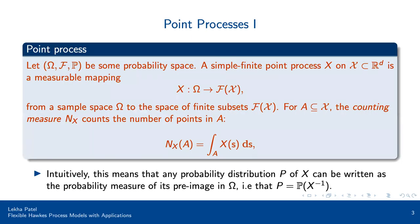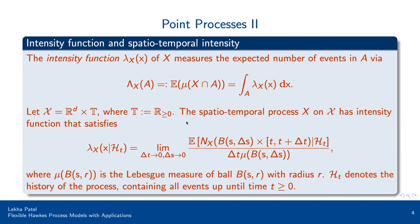As an introduction to point processes, we have some probability space, and we usually deal with simple finite point processes X on curly X, which is a subset of R to the D. This is a measurable mapping from a sample space to the space of finite subsets of curly X. For any subset of curly X, it's the counting measure, and X counts the number of points in that subset through the integral of the point process. Intuitively, this means any probability distribution P of our point process X can be written as the probability measure of its pre-image in omega.